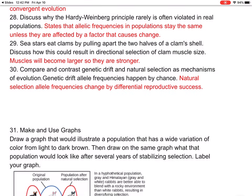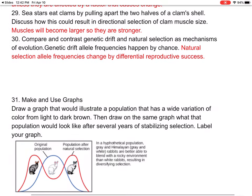Number twenty-eight: discuss why the Hardy-Weinberg principle is often violated in real populations. It states that allelic frequencies in populations stay the same unless affected by a factor that causes change. Number twenty-nine: sea stars eat clams by pulling apart the two halves of a clamshell — discuss how this could result in directional selection of a clam's muscle size. If the clam wants to stay shut, it needs to have larger muscles.